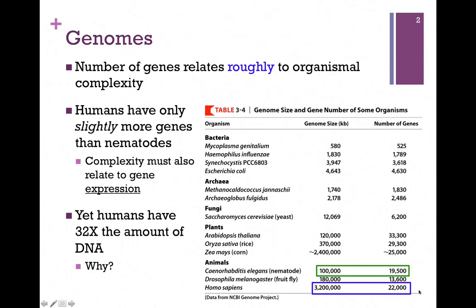we find that the number of genes for humans is only slightly more than the worm, and yet there's quite a difference in the organisms. So clearly the complexity must also be a factor of gene expression — that is, how those genes are expressed.